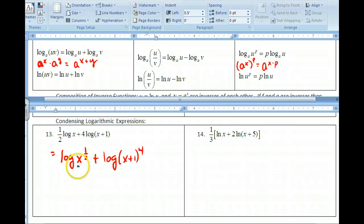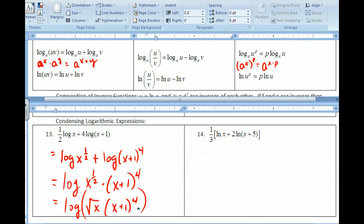So I got a log of x to the 1 half times x plus 1 to the fourth. I guess you could leave it like that. Log of square root of x times x plus 1 to the fourth. Don't bother expanding that, but just put it together to show that you know the rules.